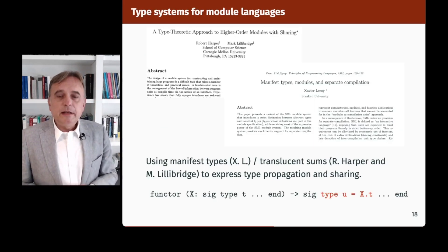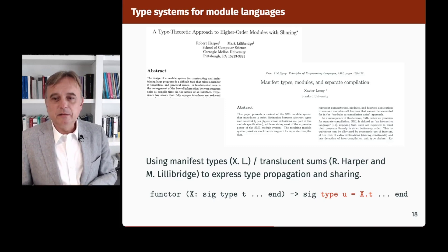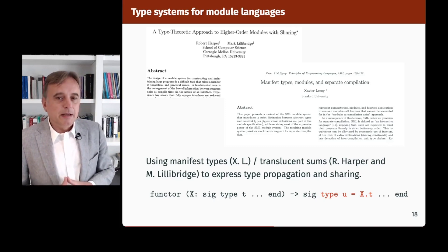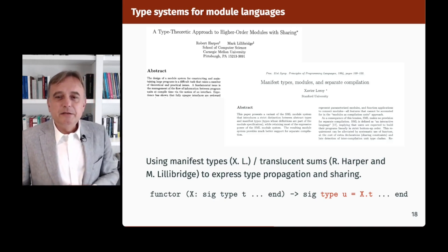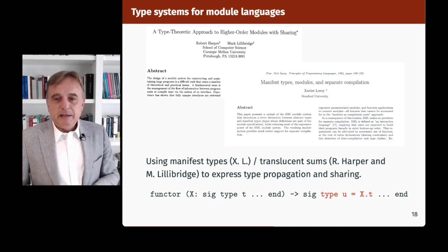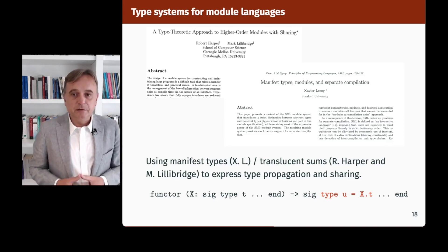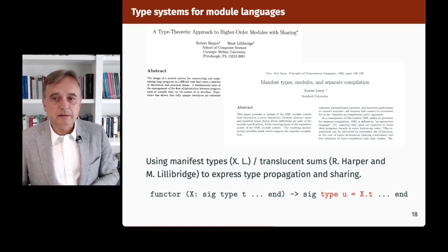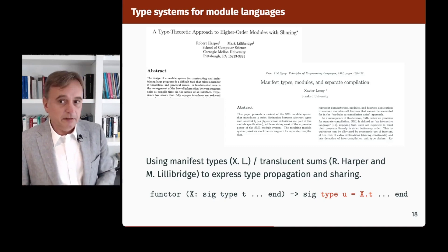The solution came in 1993 — I called it manifest types — though I may have been only the second to find it, since Robert Harper and Mark Lillibridge at CMU were working in parallel on very similar ideas. We had two back-to-back papers at POPL '94. The crucial idea was the ability to put equations between types into signatures — like 'type u = X.t' — which accounts for type propagation from functors, but also for sharing constraints to some extent.